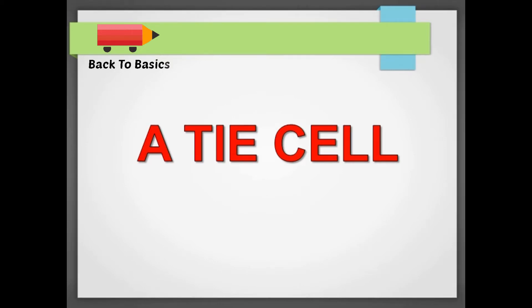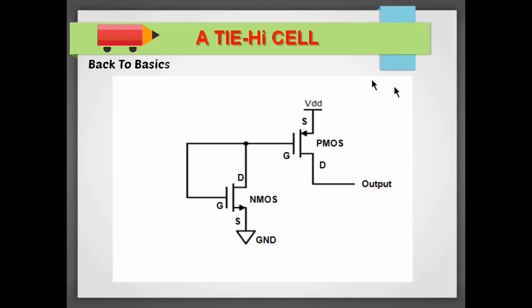Now let's see how the circuit of a tie cell looks like and how it works. This is how the circuit of a tie-high cell looks like. It consists of two transistors: one PMOS and one NMOS. This PMOS transistor acts like a pull-up transistor, its source is connected to the VDD.